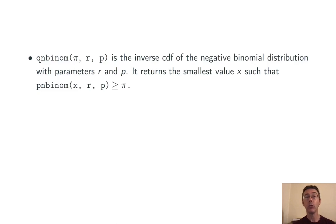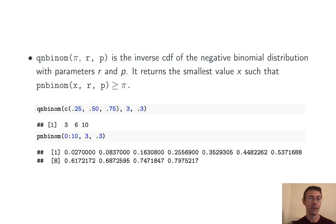Finally, qnbinom is the inverse CDF of the negative binomial distribution with those parameters. It gives you back the smallest value x such that pnbinom is greater than or equal to the probability pi that you've specified. And once again, pi can be a vector here. I think that's easier to understand when we see an example.